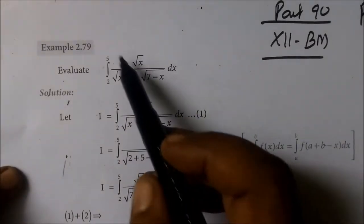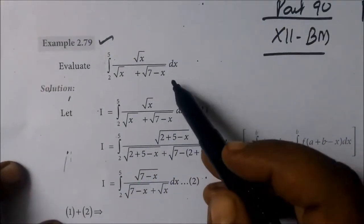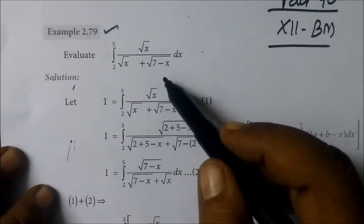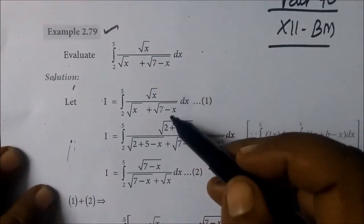For example 2.79, here you are given: evaluate the integral from 2 to 5 of root x divided by root x plus root of 7 minus x, dx.